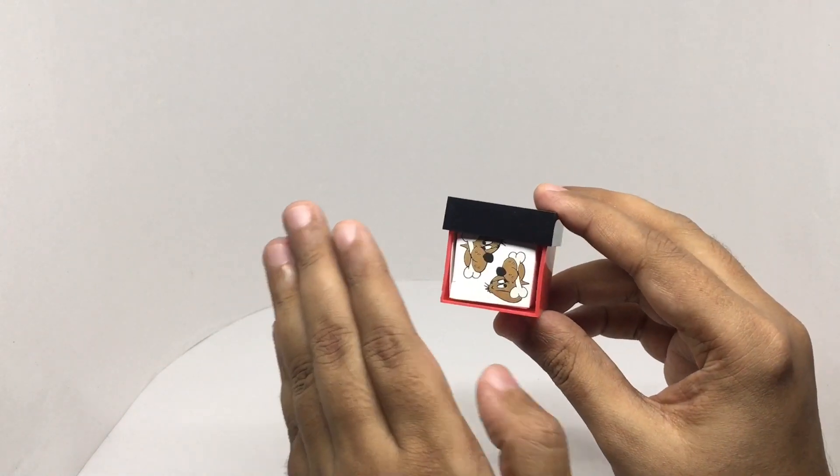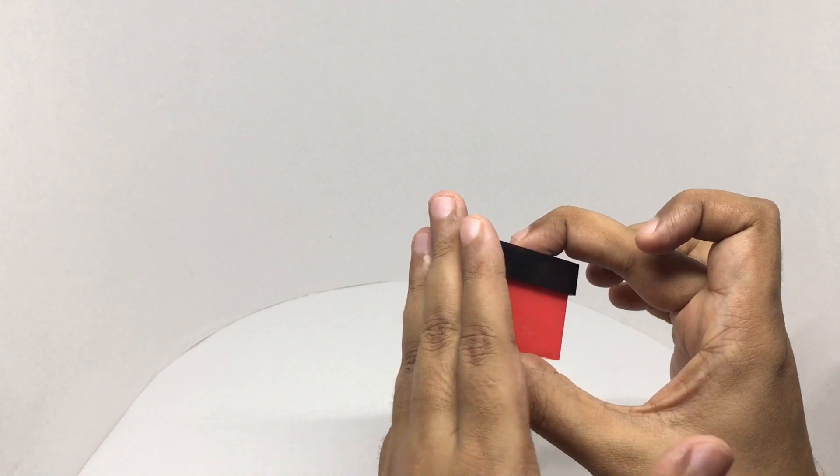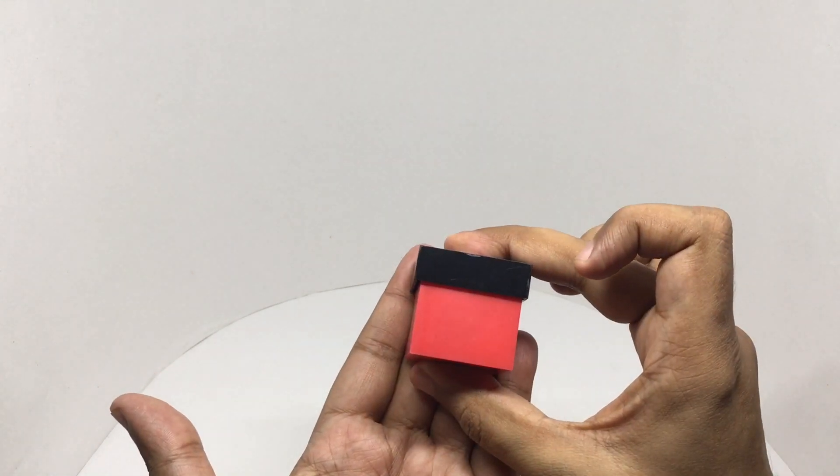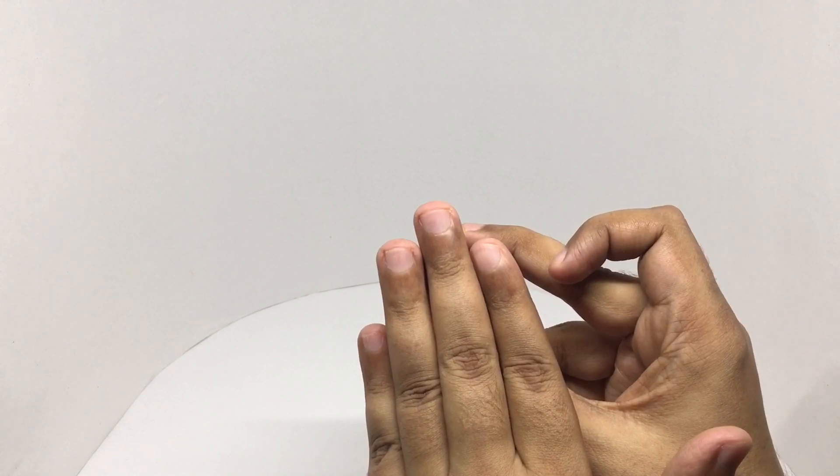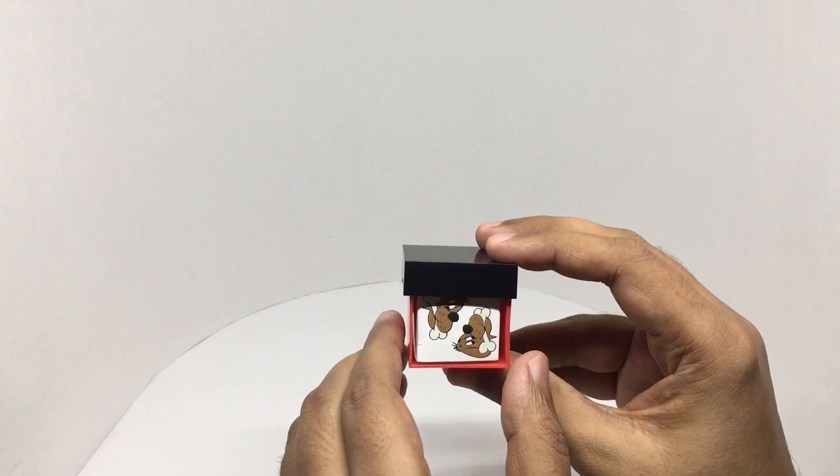He covers the box with his head, says some magic stuff. This is what the audience sees and he makes the prediction of the dog, then takes it from his forehead.